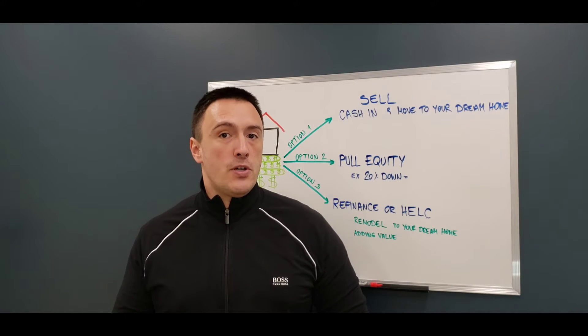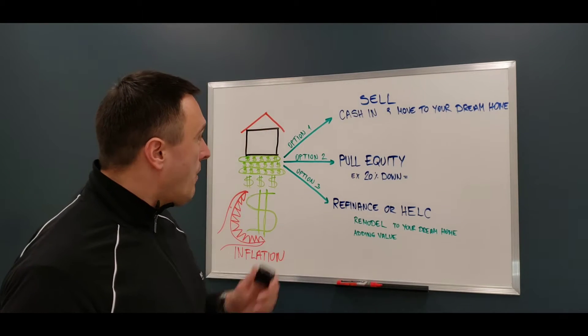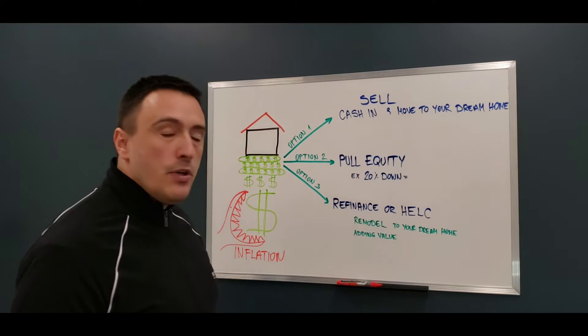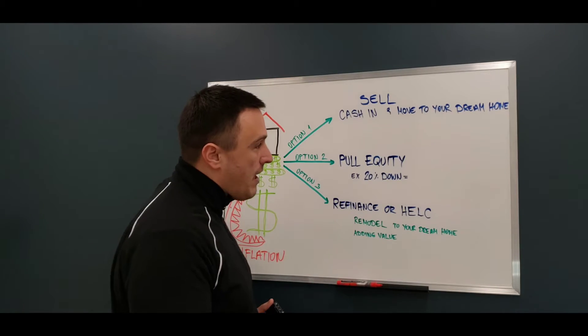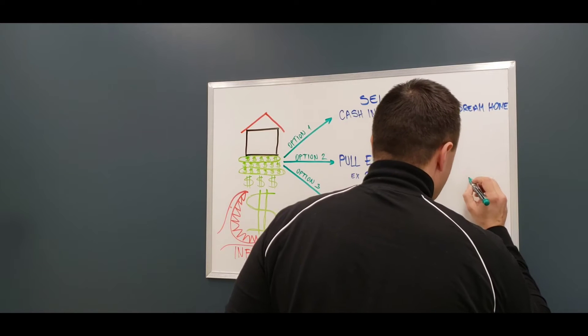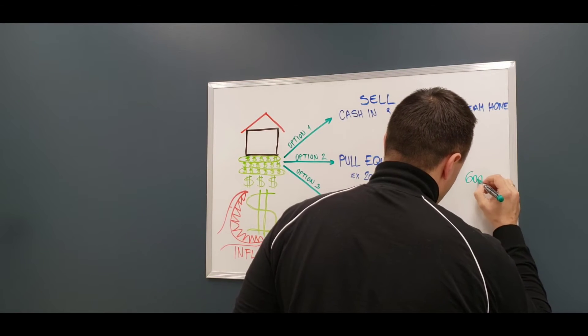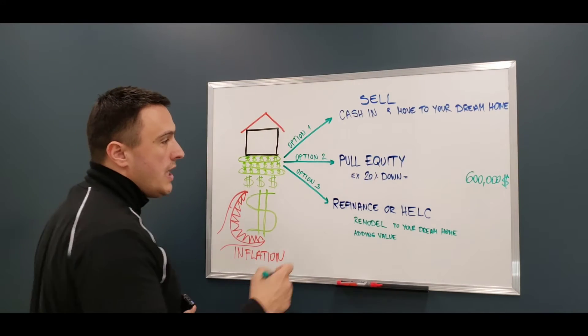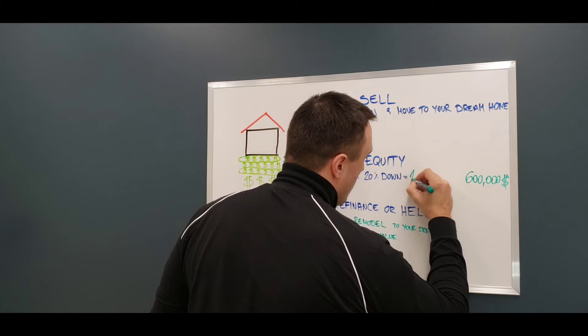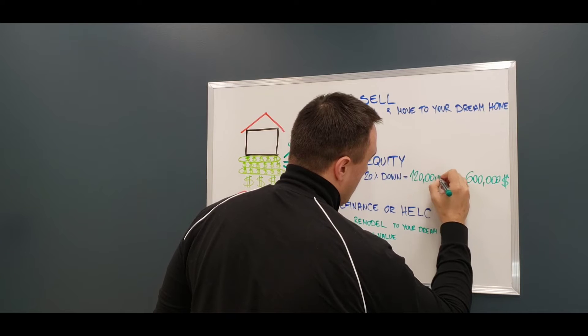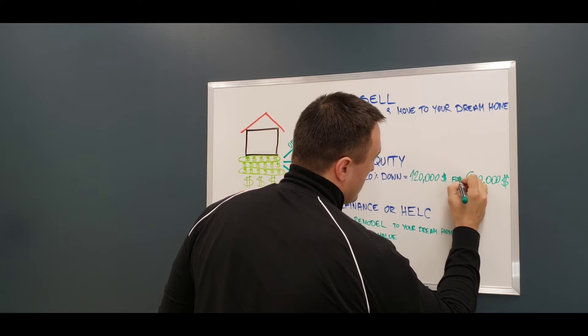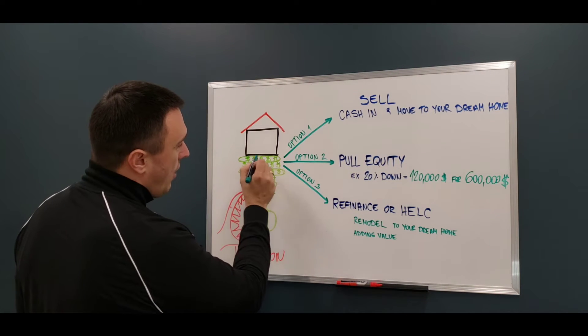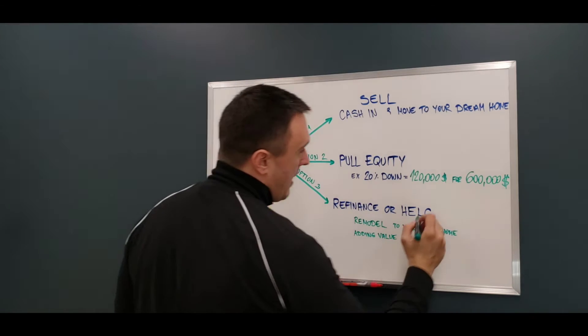Option number two is you can pull out some equity from your home and put it as a down payment for your investment property. So let's say you want to purchase a pre-construction condo that is worth $600,000. Well, all you need is 20% down, which is $120,000 for a $600,000 property, and you are just pulling out a fraction of your home equity, putting it as a down payment.